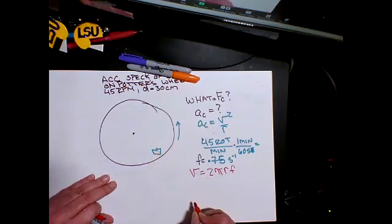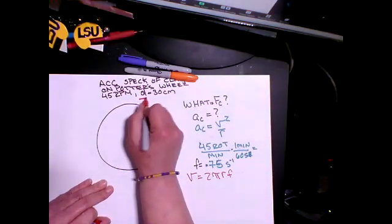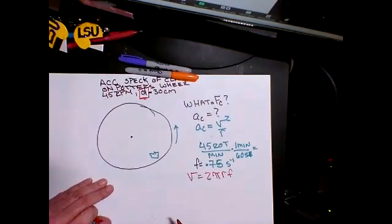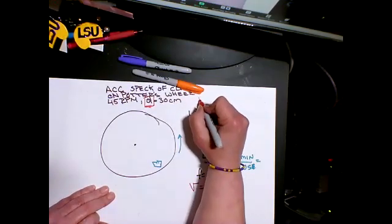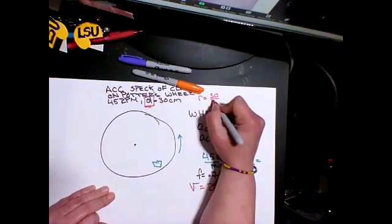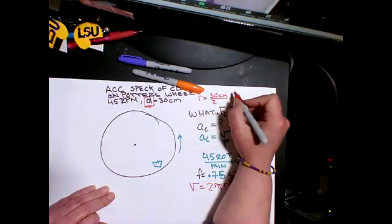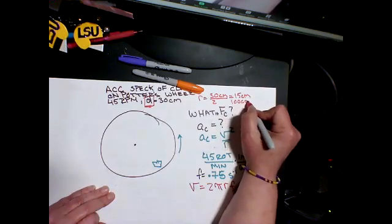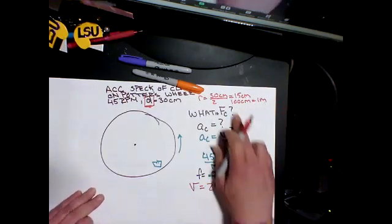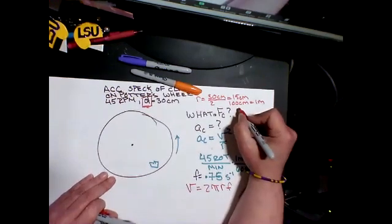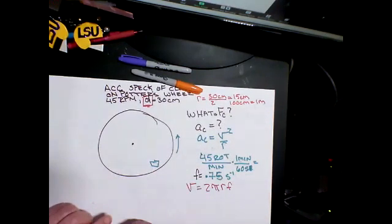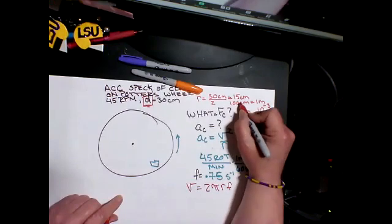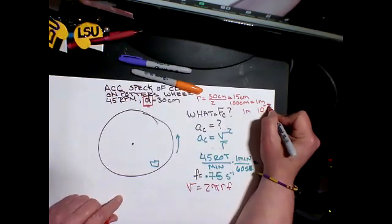We know the radius. Oh no, pay attention - the book is tricky. They gave you diameter, so radius is 30 divided by 2. That's in centimeters, equals 15 centimeters. There are 100 centimeters in 1 meter, and this needs to be in terms of meters. One centimeter is 10 to the negative 2 meters.